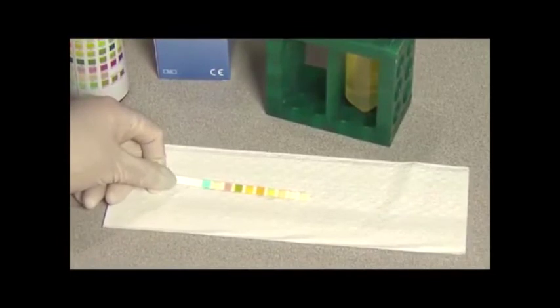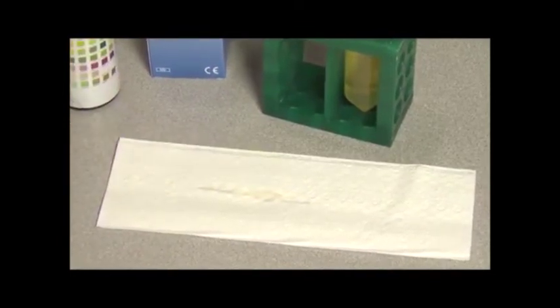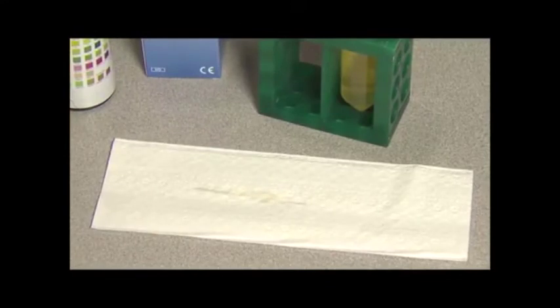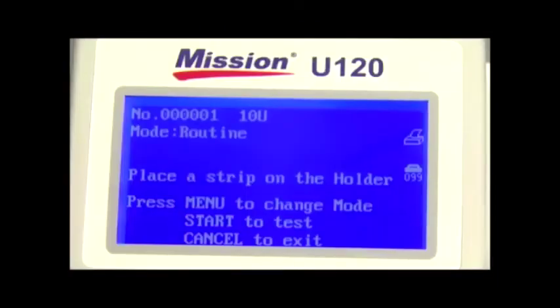Touch the edge of the strip to absorbent paper to avoid mixing chemicals from one pad to another and soiling hands with urine. Place the strip with the reagent area facing upwards onto the strip holder.